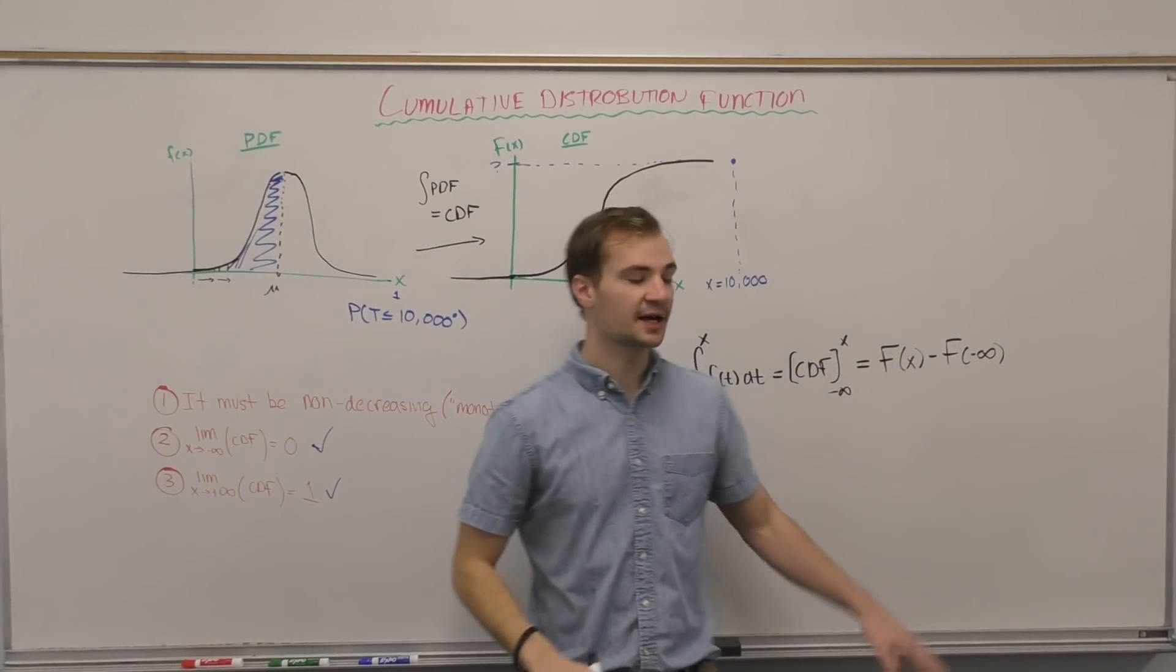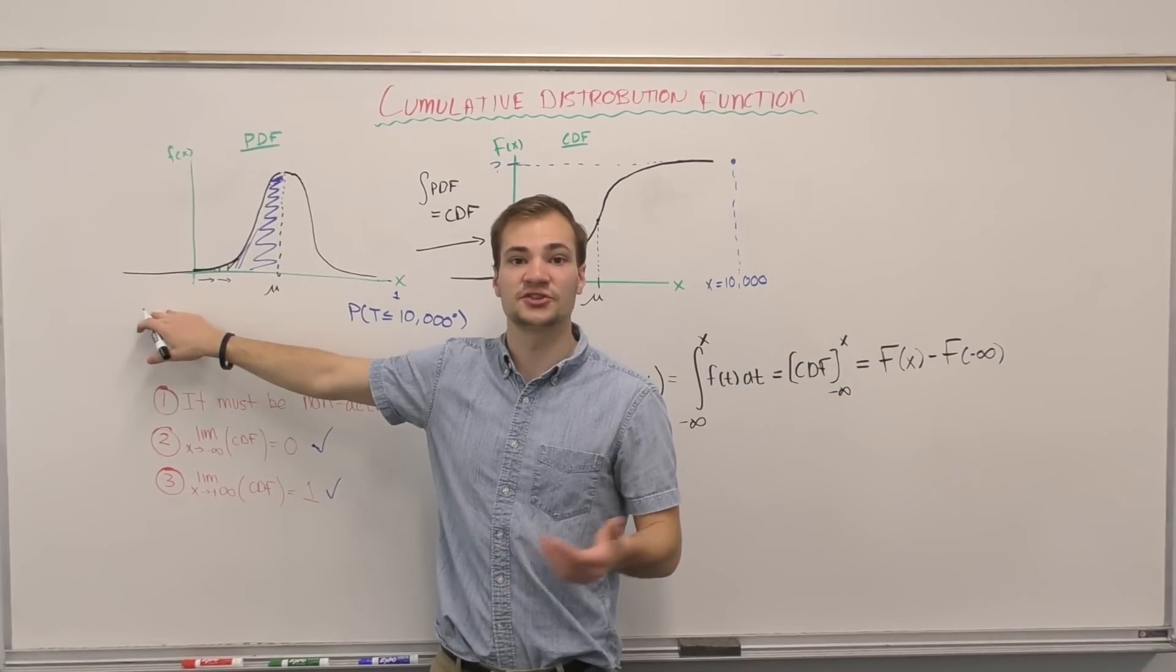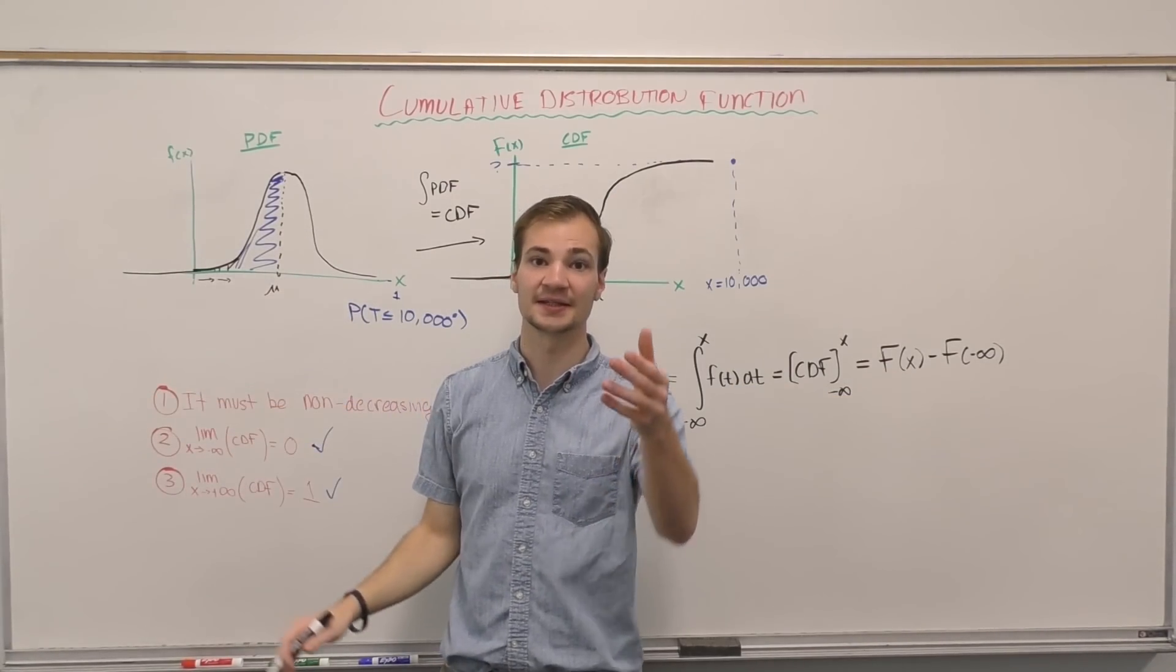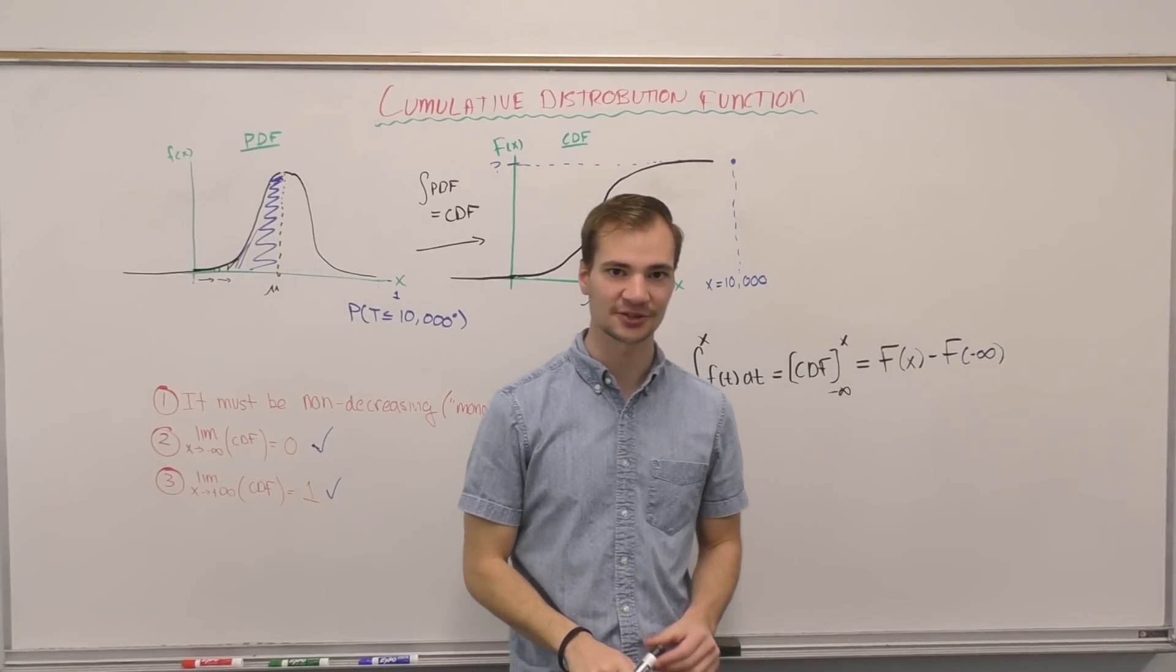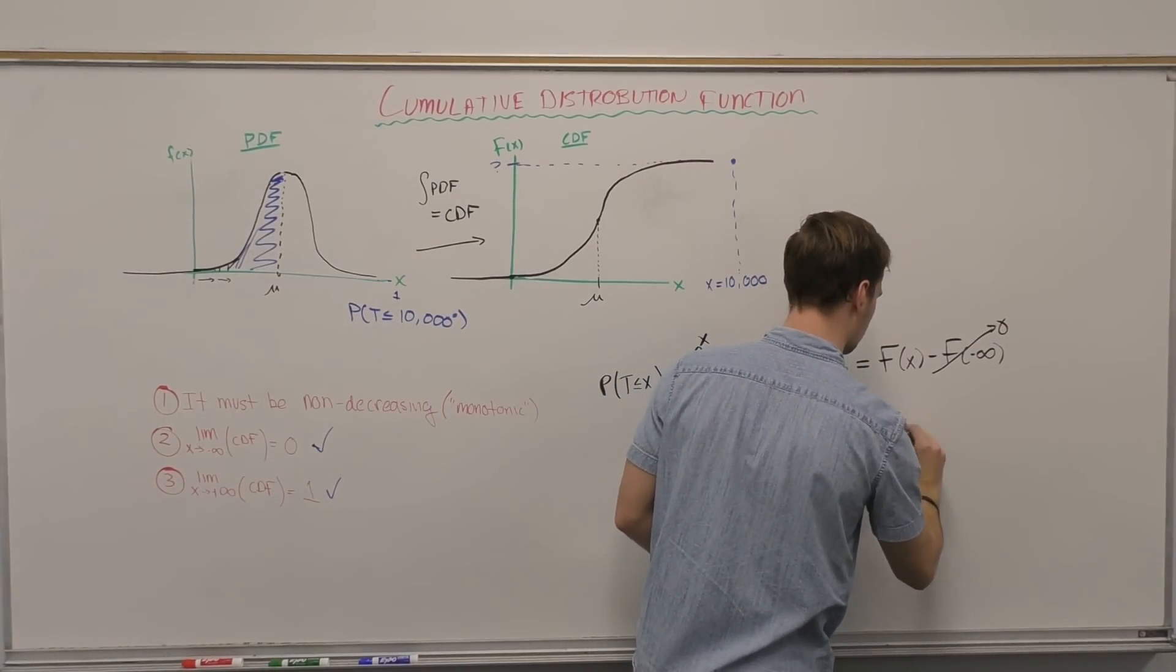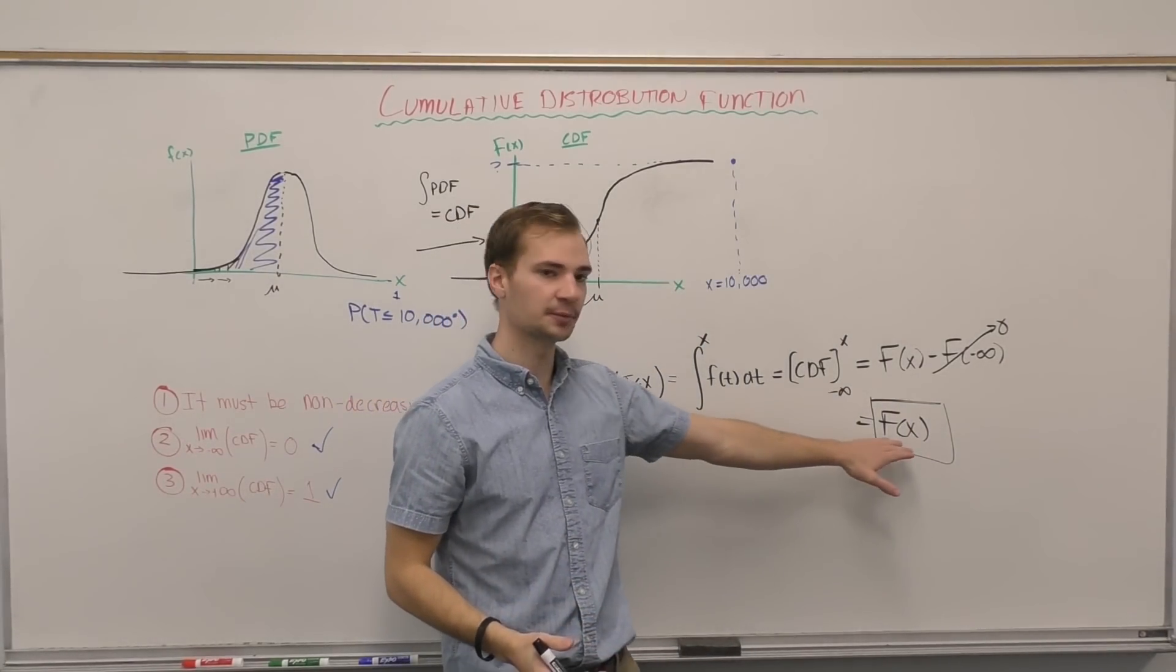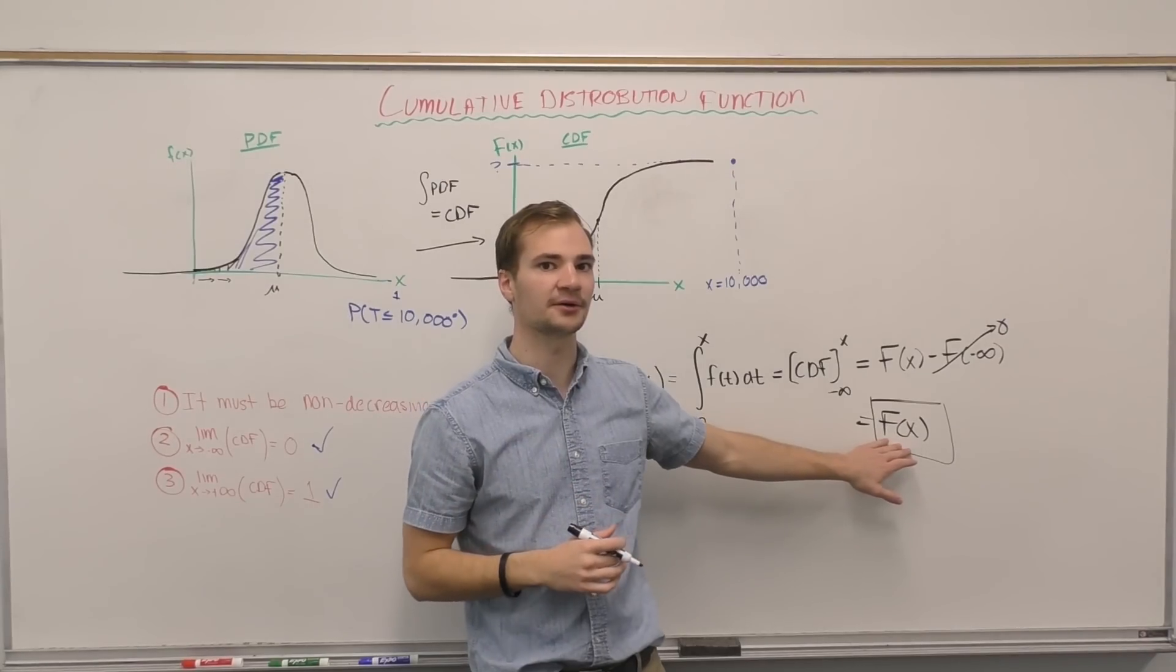Now, because we know that the CDF of negative infinity is zero—there's zero percent of being less than negative 10,000 degrees in Arizona—we know that that value is equal to zero.